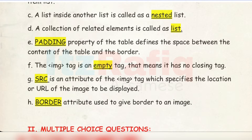E) The padding property of the table defines the space between the content of the table and the border. F) The image tag is an empty tag, meaning it has no closing tag. G) src is an attribute of the img tag which specifies the location or URL of the image to be displayed. H) The border attribute is used to give a border to an image.